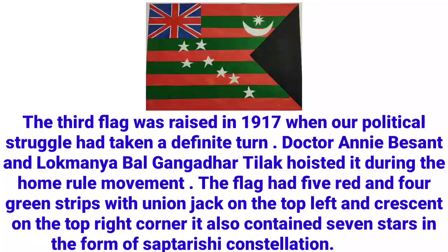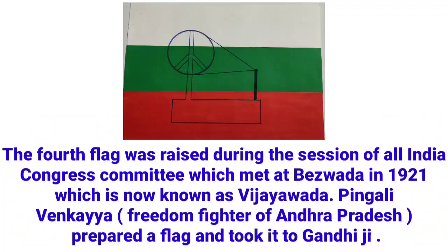The third flag was raised in 1917 when our political struggle had taken a definite turn. Dr. Annie Besant and Lokmanya Bal Gangadhar Tilak hoisted it during the Home Rule Movement. The flag had five red and four green stripes with Union Jack on the top left and a Crescent on the top right corner. It also contained seven stars in the form of the Saptarishi constellation.